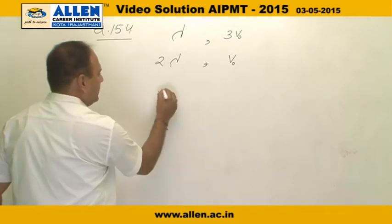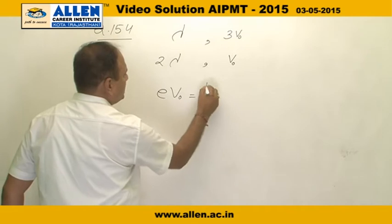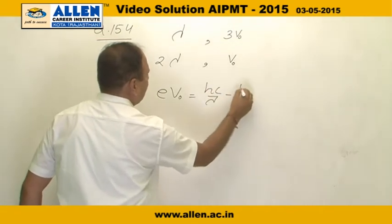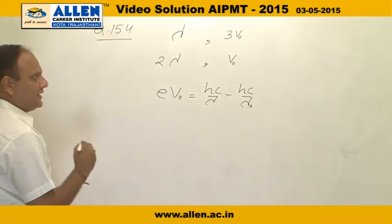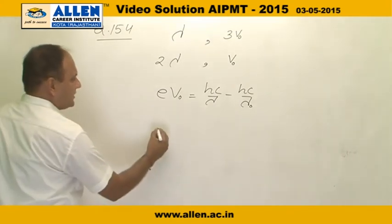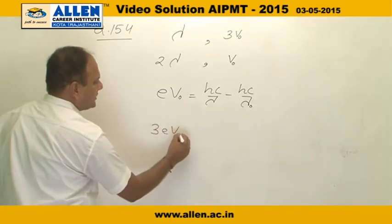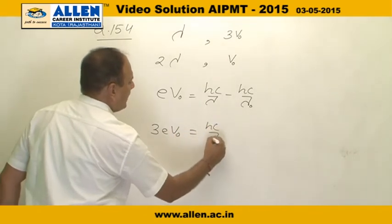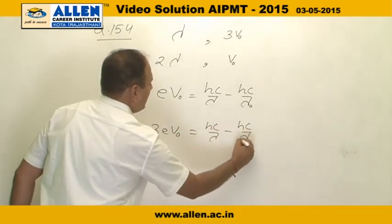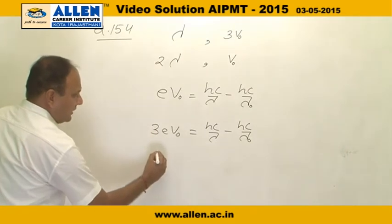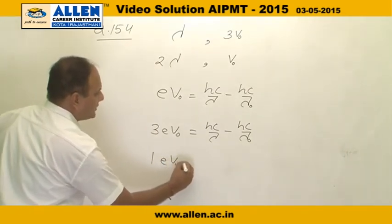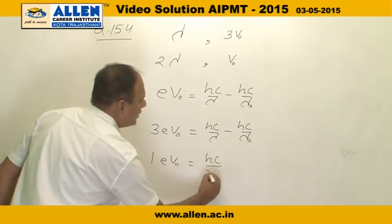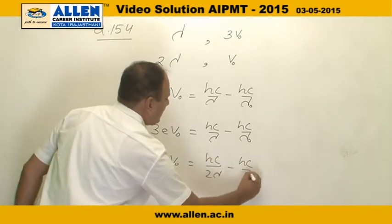From Einstein equation, we know that eV0 equals to hc upon lambda minus hc upon lambda0. By placing these values for both radiations, we get 3V0 equals to hc upon lambda minus hc upon lambda0. For second radiation, we will get the energy of electron eV0 equals to hc upon 2 lambda minus hc upon lambda0.